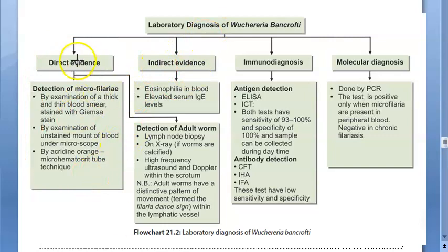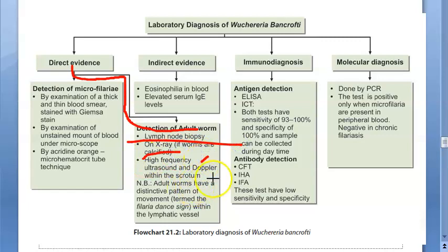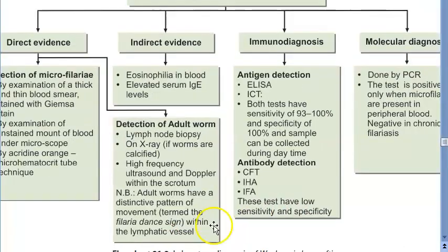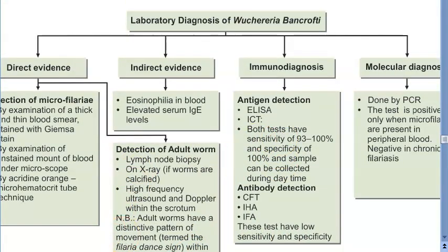If you want to see the adult worm, you should take a lymph node biopsy, or do X-ray or ultrasound. Adult worms have a distinct pattern of movement called the filaria dance sign — they appear to be dancing in the lymph vessels. That covers the direct methods.